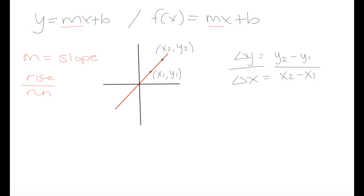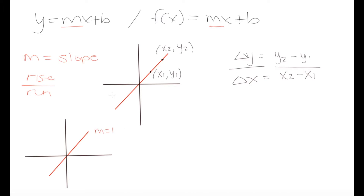Let's look at how different slopes affect the appearance of a graph. On our Cartesian plane, the red line has a slope of 1. A second line has a greater slope of 2, and a third line has an even greater slope of 3.